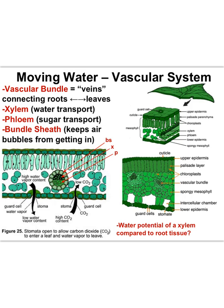Water gets from the roots to a plant's leaves by following xylem that starts in the roots, goes up the stem, and then through a leaf's veins, branching off to smaller branches of the vascular system and finally to all of the leaf tissues. To do this, plants have to keep the water potential getting progressively lower.